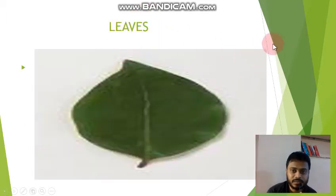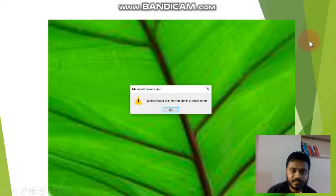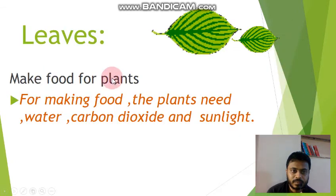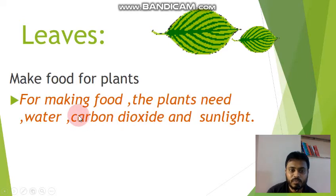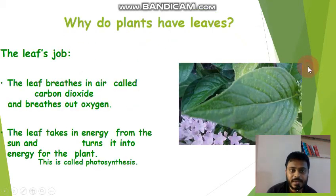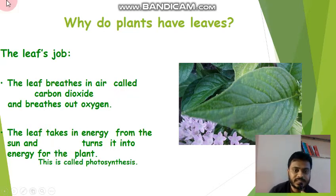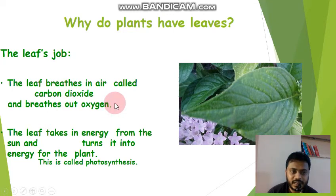Now the fourth one, leaves. Leaves make food for plants. For making food, the plant needs water, carbon dioxide, and sunlight. The leaf breathes in air called carbon dioxide and breathes out oxygen. Leaves breathe in carbon dioxide and breathe out oxygen. The leaf takes in energy from the sun and turns it into energy for the plant.